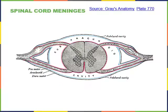Here we see a transverse section through the spinal cord showing the layers of meninges. The outermost layer is the dura mater shown in black. There is a small subdural cavity between the dura mater and the arachnoid mater, shown in blue. Just deep to the arachnoid mater is the subarachnoid space containing cerebrospinal fluid surrounding the spinal cord. The deepest layer of meninges, shown in red, is the pia mater.